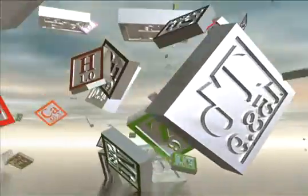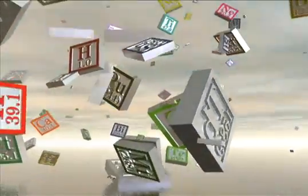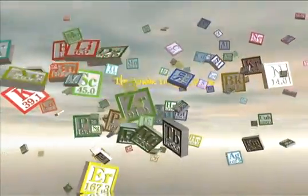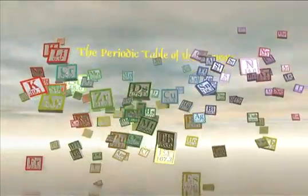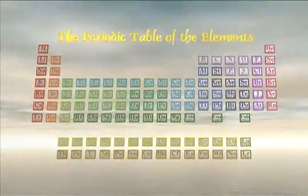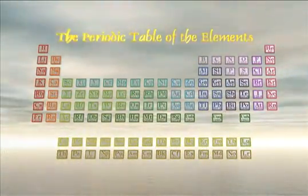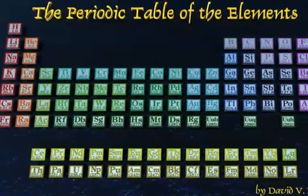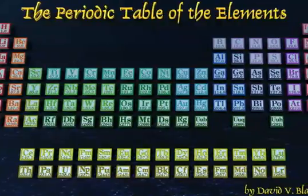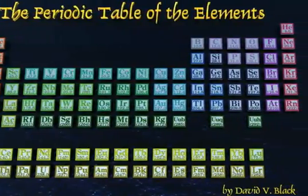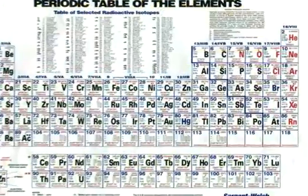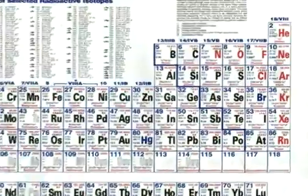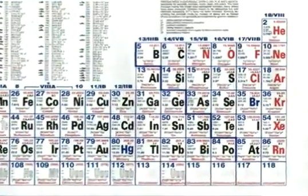In part one of this episode, we introduced you to the Periodic Table of the Elements and why all chemistry students should understand its structure and origins. Now, we continue to unearth the story of how the chemical elements came to be organized into this famous chart.